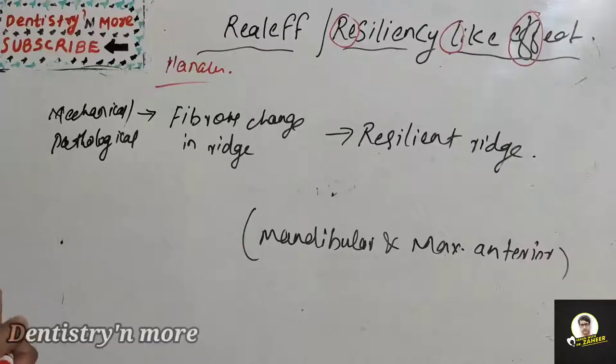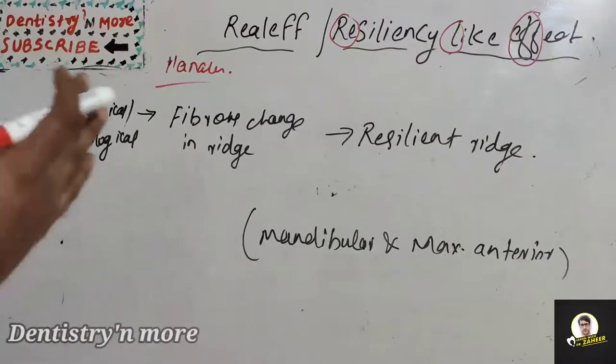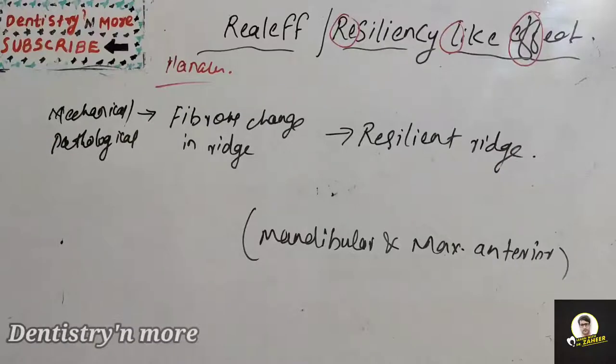This Realeff effect plays a very important role in all steps of complete denture fabrication, from the primary impression, border molding, final impression, jaw relation, trying procedure, remounting, and even follow-up. It can be a cause of error in fabrication.